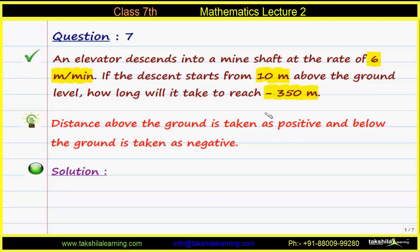We are given a situation: an elevator descends in a mine shaft at the rate of six meters per minute, and the descent starts from a point which is 10 meters above the ground. How long will it take to reach minus 350 meters, that is, a depth of 350 meters below the ground? Our key point for this question is that distance above the ground is taken as positive and below the ground is taken as negative.